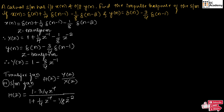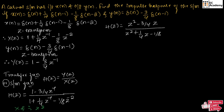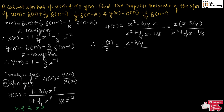Now for this equation, let us multiply and divide by z². Therefore we get H(z) equal to [z² minus 3/4 z] divided by [z² plus 1/4 z minus 1/8]. Taking z as common from the numerator, we can write z(z minus 3/4) divided by [z² plus 1/4 z minus 1/8]. Therefore H(z)/z equals [z minus 3/4] divided by [z² plus 1/4 z minus 1/8].